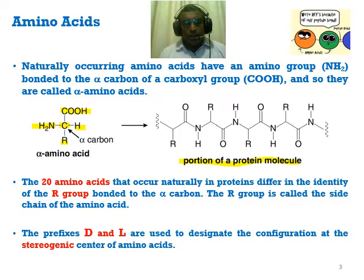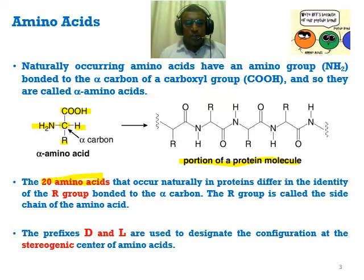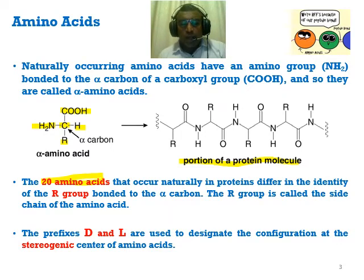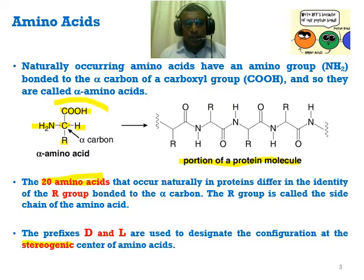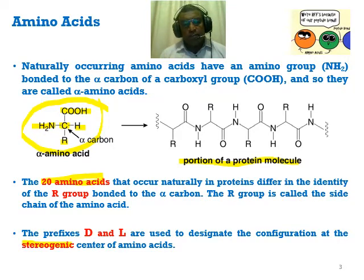There are 20 amino acids. In terms of structure, each amino acid could be either in the form of D or L stereoisomers. This comes about because of the stereogenic center of an amino acid. A stereogenic center must have four different groups connected to the central carbon, and therefore it can give rise to either the D or L stereoisomer.